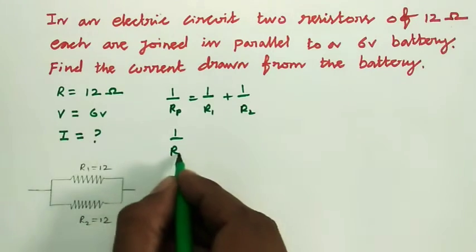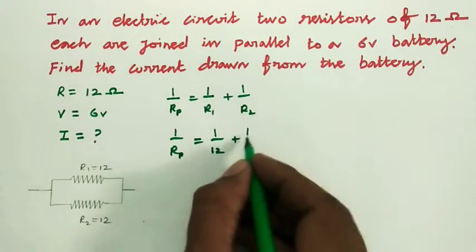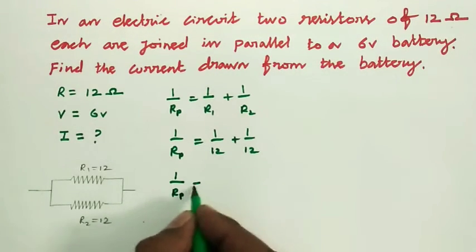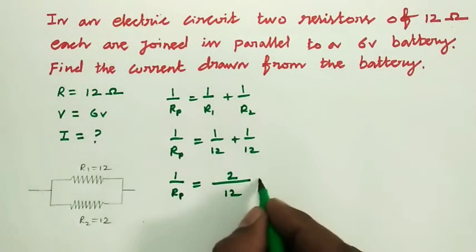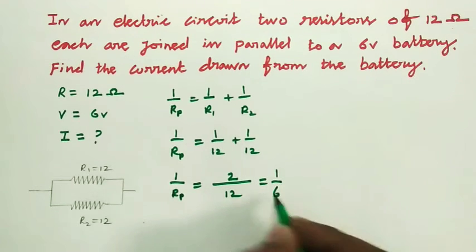So 1 by Rp is equal to 1 by 12 plus 1 by 12. So 1 by Rp is equal to, take as common 12, it is 2. So therefore, it is equal to 1 by 6.